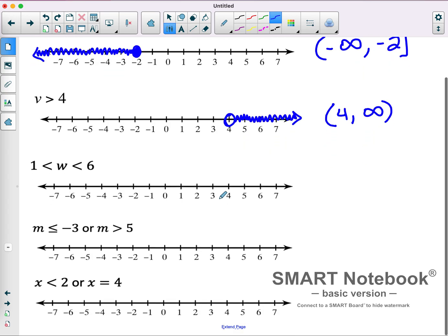This third one is saying all the values between 1 and 6. This W is some number that's less than 6, but also greater than 1. So, I'm going to find those boundaries, 1 and 6, put my circles. Both of those are going to be open, because we're not including 1 or 6. And we're shading all the values that are between.